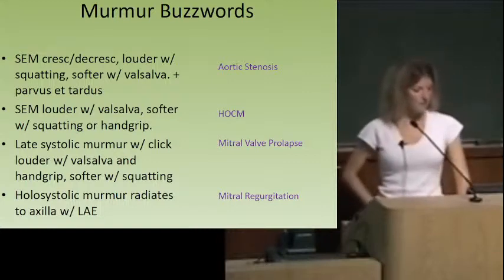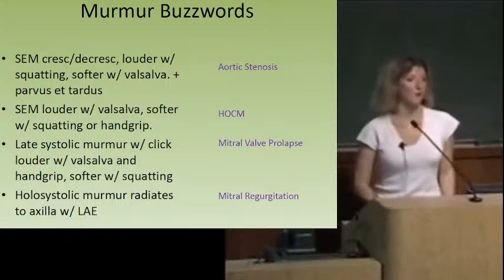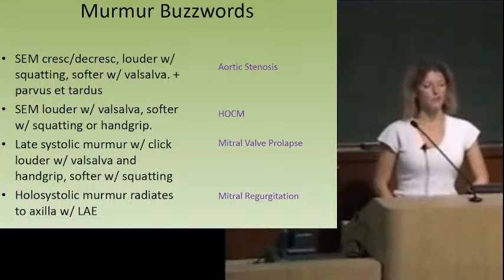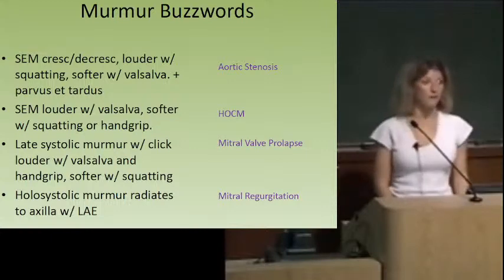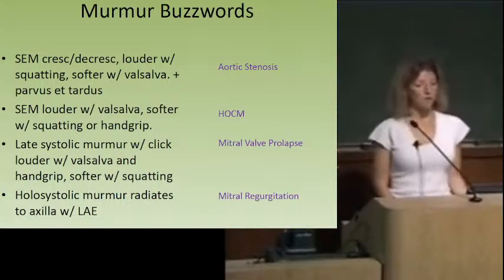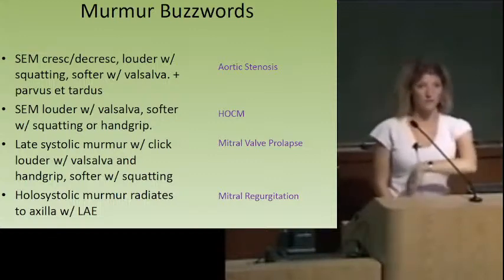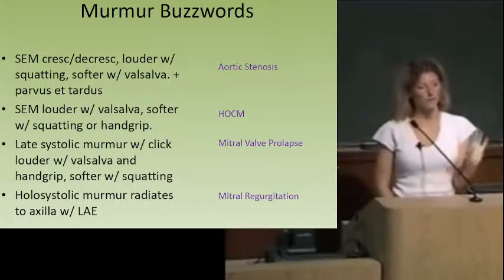The second murmur: also a systolic murmur, but louder with Valsalva, softer with squatting and hand grip. This might be a young patient at their sports physical — hypertrophic obstructive cardiomyopathy, HOCM. The hallmark is louder with Valsalva, because the systolic ejection murmur of aortic stenosis is softer with Valsalva — Valsalva decreases preload, making less blood cross the stenosed valve, improving AS but worsening HOCM.